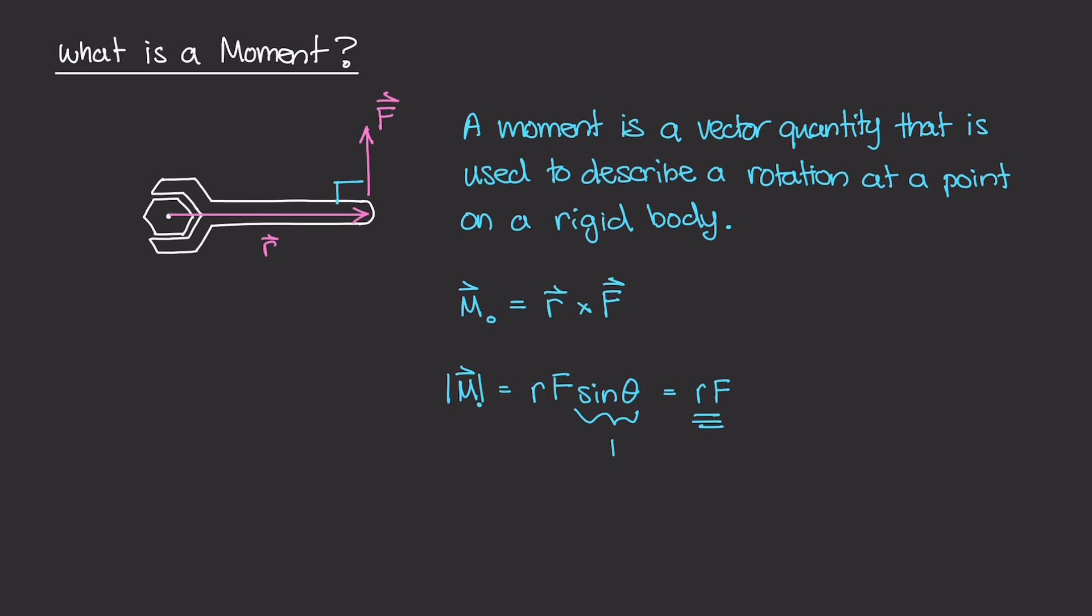Earlier, I did say that a moment is a vector quantity, right? So a vector crossed with another vector gives us another vector here. But you might ask, which way is this vector pointing? Which way is this moment going? Because it is a vector, therefore it has a magnitude and a direction.